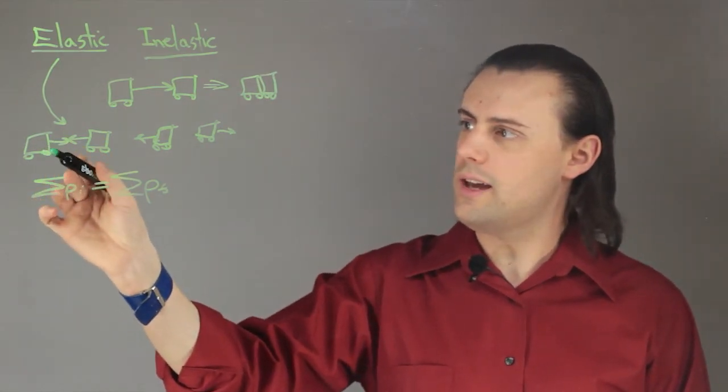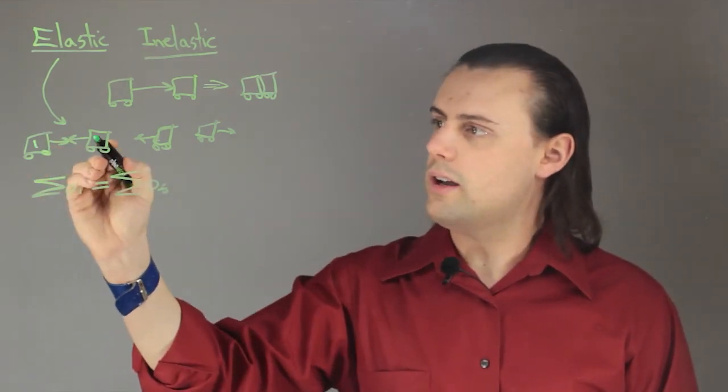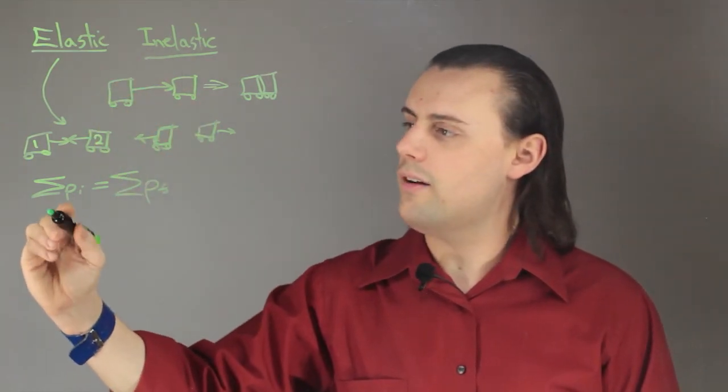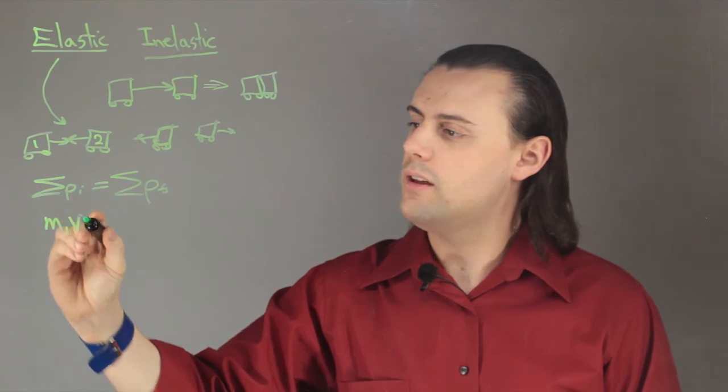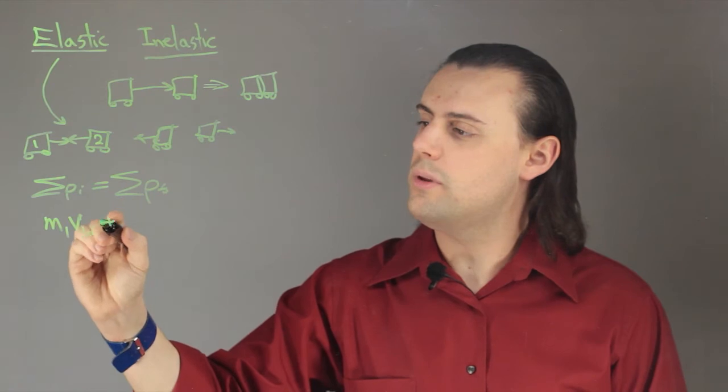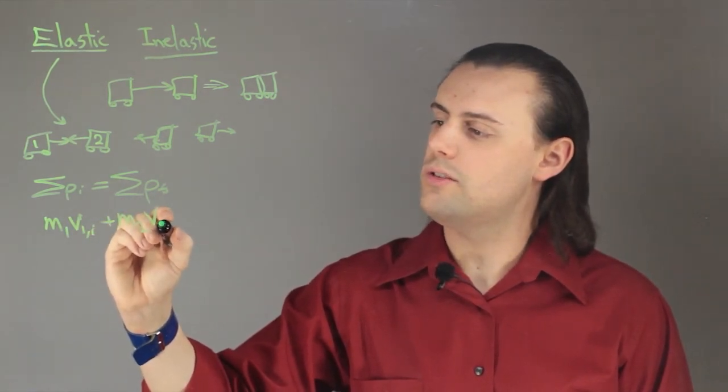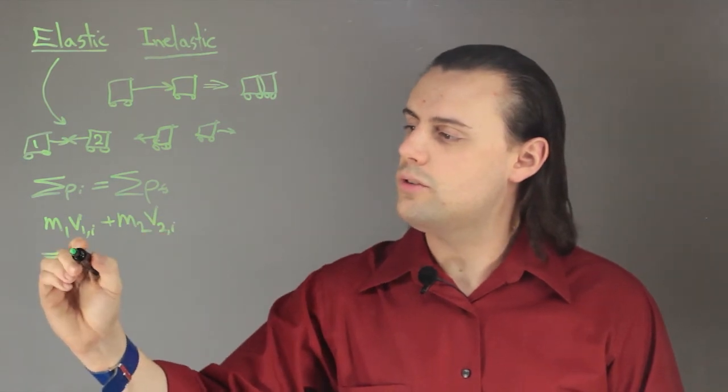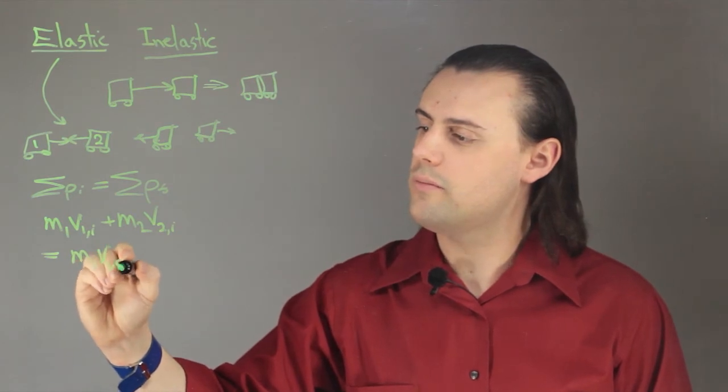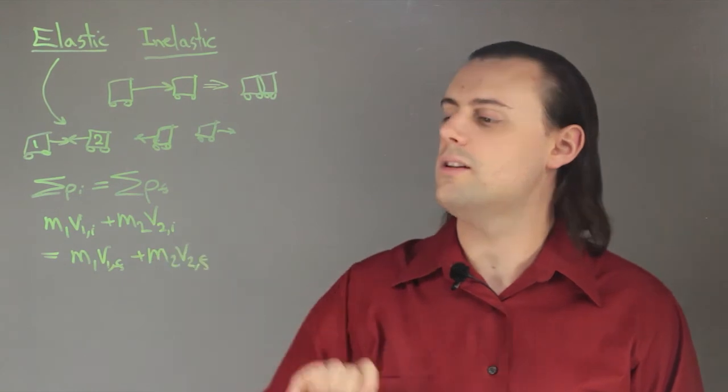So, if we consider this simple case of two cars, you have car 1 and car 2. In the case of an elastic collision you will have the mass of car 1 times the velocity of car 1 initially plus the mass of car 2 times the initial velocity of car 2. That's going to be equal to mass of car 1 times its final velocity plus the mass of car 2 times its final velocity as well.